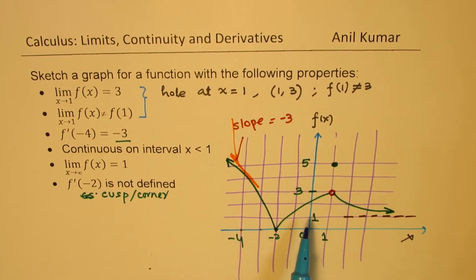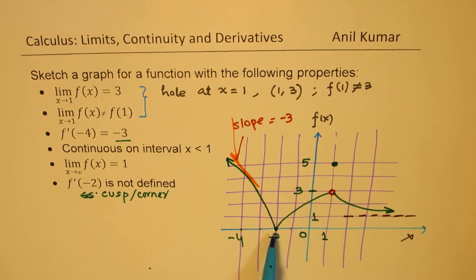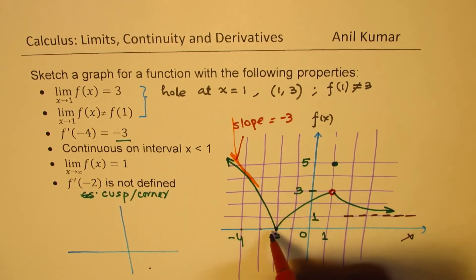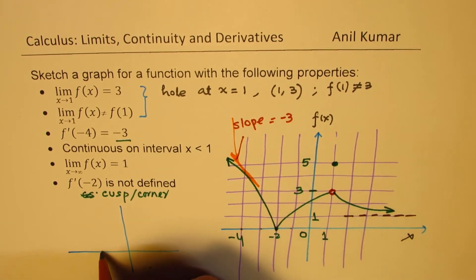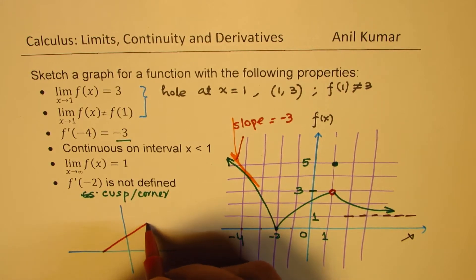Now, let me also sketch an alternate solution to this with a corner, as I was saying. So I will make a rough sketch here in which we will consider similar conditions except for I will make a corner here. So basically at minus 2, we will make a corner like an absolute function.